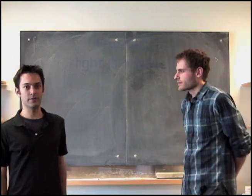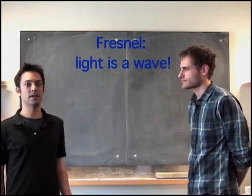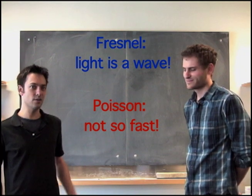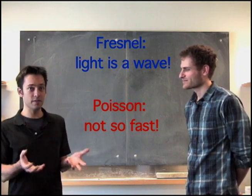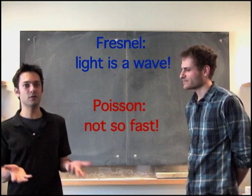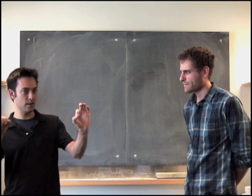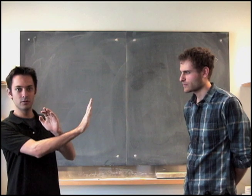So a scientist named Fresnel submitted his theory that said light was a wave. But another scientist in the committee, Poisson, was not a fan of the wave theory of light. And he wanted to prove Fresnel's theory wrong using only its own arguments. And he found a ridiculous conclusion, that if you shine a light on a perfectly spherical object, in the middle of its shadow, you'll see a bright dot.